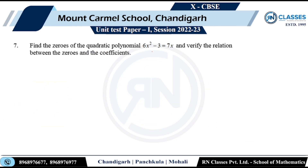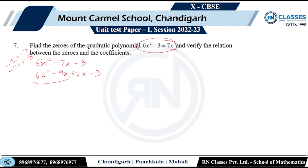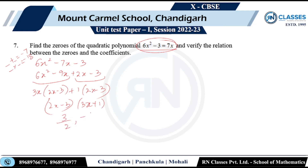He says find the zeros of the polynomial and verify the relationship between zeros and coefficients. The polynomial is 6x squared minus 7x minus 3. Splitting the middle term: 6x² minus 9x plus 2x minus 3, taking 3x common gives 3x(2x-3), and 1 common gives (2x-3)(3x+1). So the zeros are 3/2 and minus 1/3.